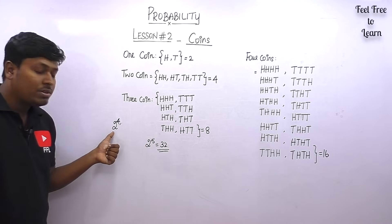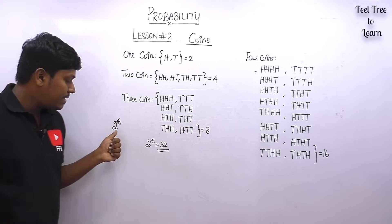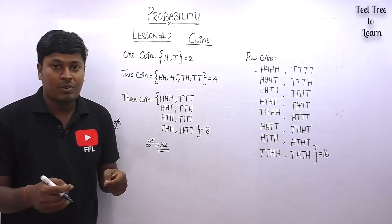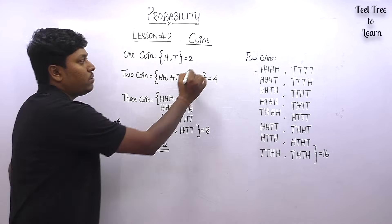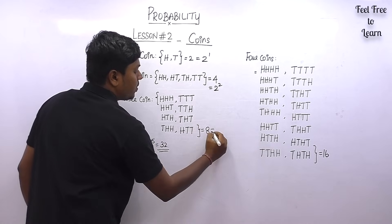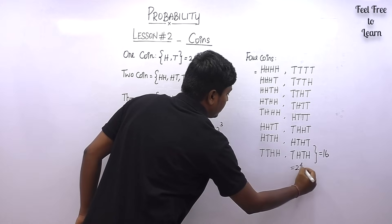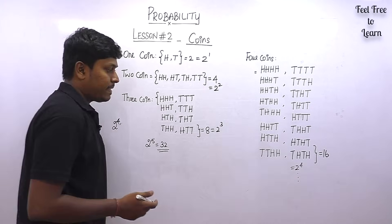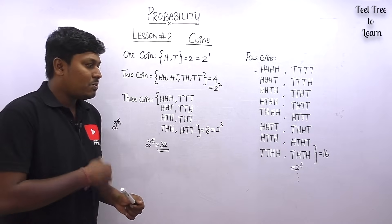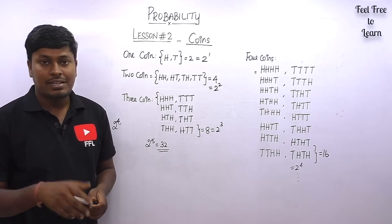The base 2 is always constant because coins only have two possible outcomes — heads or tails — but the power changes based on the number of coins tossed. Once you watch and practice all 15 questions, you will definitely understand this concept.